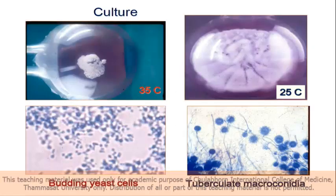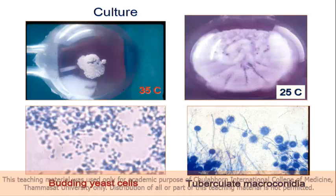In the mold form, histoplasma has a tuberculate — this is a very typical tuberculate macroconidia of histoplasma. The yeast form will be budding yeast cells. This is typical. The infective form of the mold is small spores.